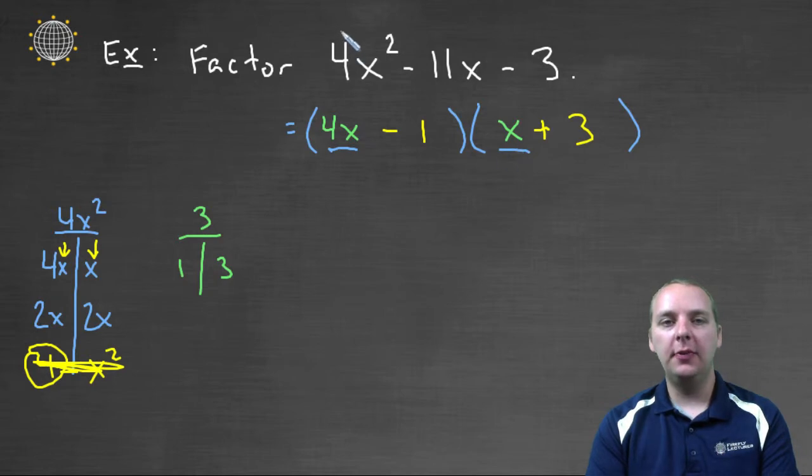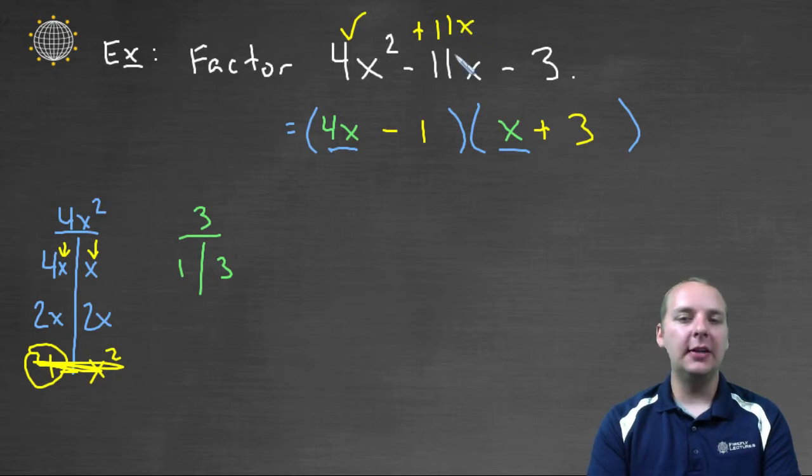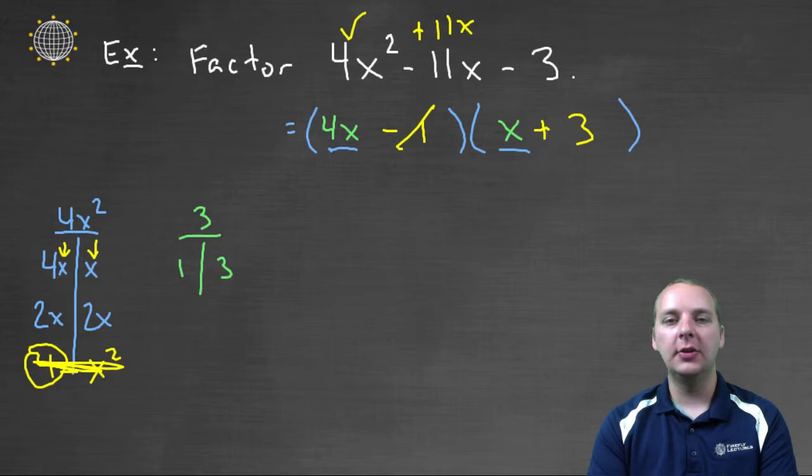Four x times x would give me four x squared. The outer would give me twelve x. The inner would give me minus x, which makes plus eleven x. Whoops, that doesn't work, so I'm going to scrap that, that was the wrong idea, that doesn't work.